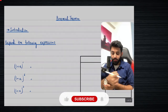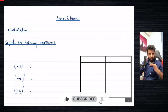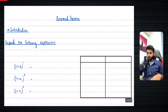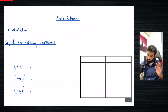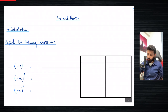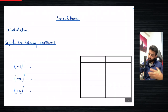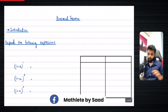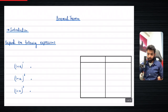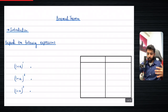In this video we are going to be covering the topic Binomial Theorem at AS level. Before we start expanding and using the formula, let's first understand what the term binomial means. 'Bi' basically means two, and 'nominal' means terms, so put that together and this means that you have two terms.